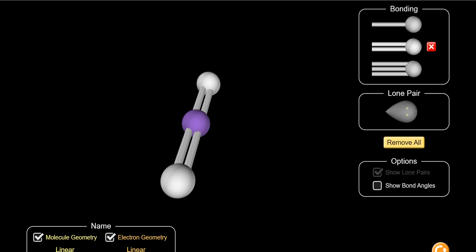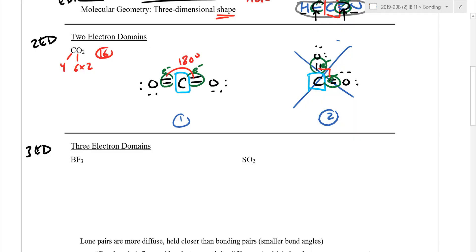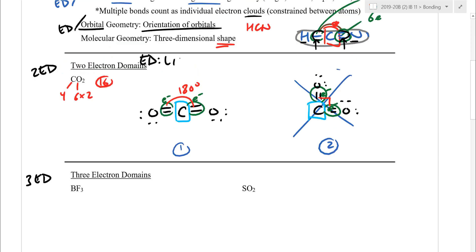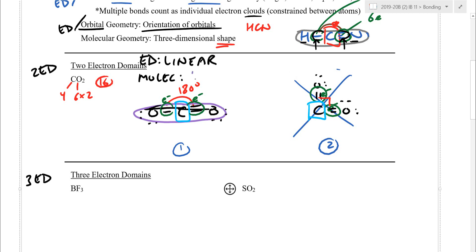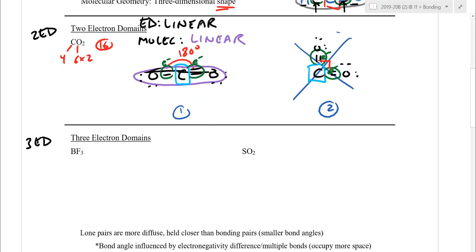For the two electron domain case, the electron domain geometry is called linear, since bonding is 180° apart with the negatives as far apart as possible. The molecular geometry is also linear — the C and both O's are in a straight line. You need to know the names of these shapes and the bond angles. Although drawing CO2 bent is a valid Lewis diagram, we prefer the linear drawing, especially when we look at polarity later on.